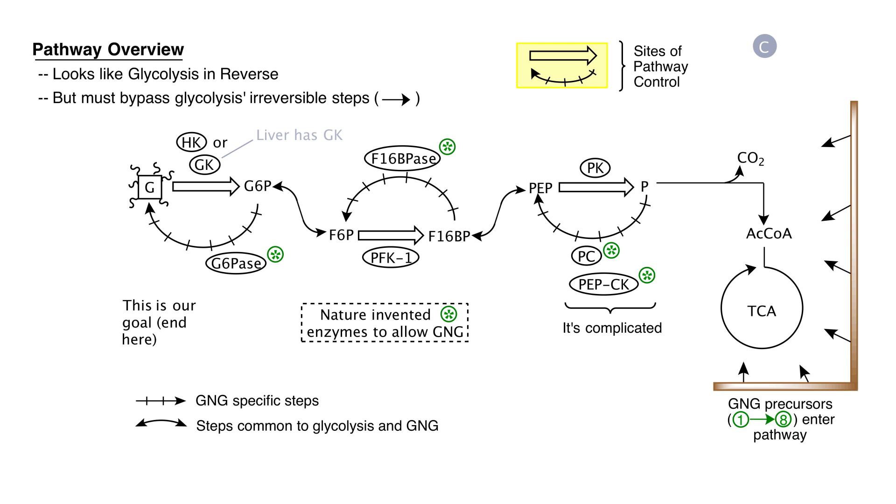A second asterisked enzyme of gluconeogenesis is fructose 1-6-bisphosphatase, which converts fructose 1-6-bisphosphate by hydrolysis to fructose 6-phosphate. The third irreversible step that we need to bypass is pyruvate kinase. Two enzymes were invented to enable this bypass, pyruvate carboxylase, which we've studied before in several contexts in 507, and a new enzyme, phosphoenolpyruvate carboxykinase, or PEPCK.